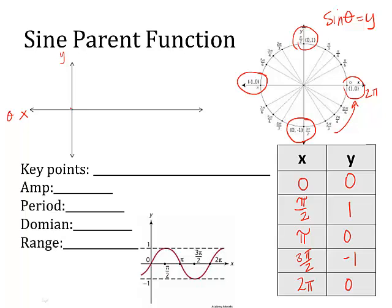So as we plot these points, we have one, negative one, and zero as my y values, and we're going to go the full circle, all the way out to two pi. So we went to pi over two, pi, three pi over two, and then two pi. At zero, it's here. At pi over two, it's up at one. At pi, it's back to zero. At three pi over two, it's down at negative one. And at two pi, it's back to zero.